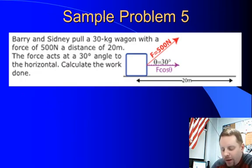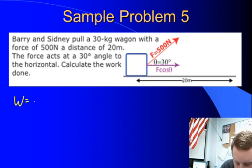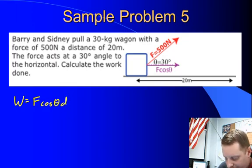Barry and Sidney pull a 30 kilogram wagon with a force of 500 newtons, a distance of 20 meters. The force acts at a 30 degree angle to the horizontal. Calculate the work done. Well, in this case, the work done is going to be force times the cosine of the angle between the force and the displacement vector, or 500 newtons, cosine of 30 degrees, times the displacement of 20 meters.